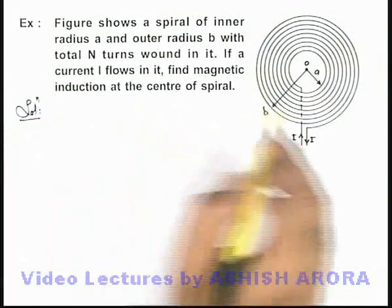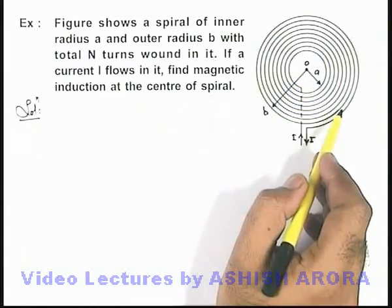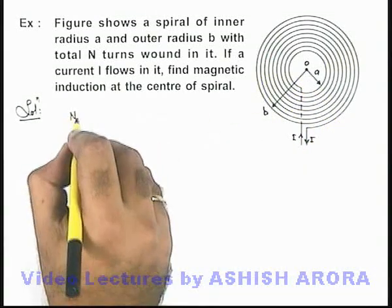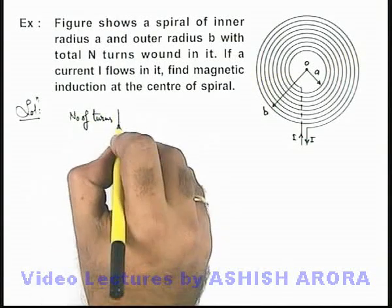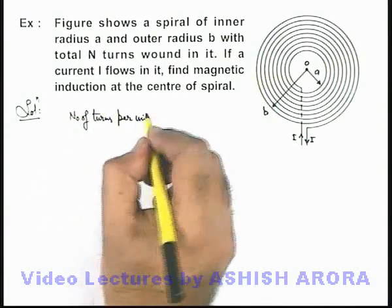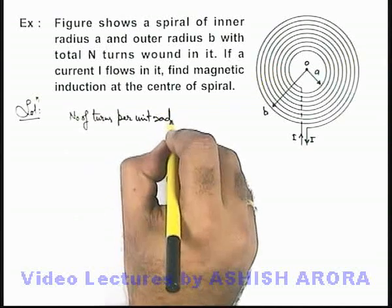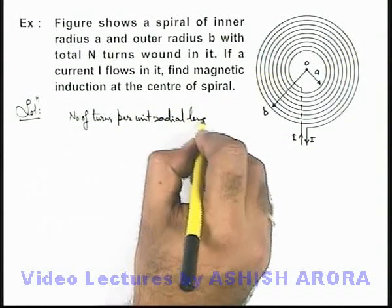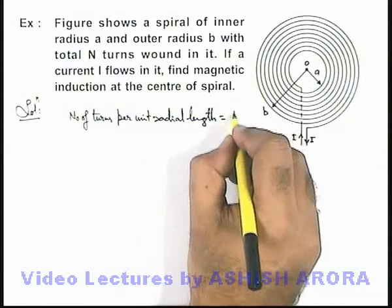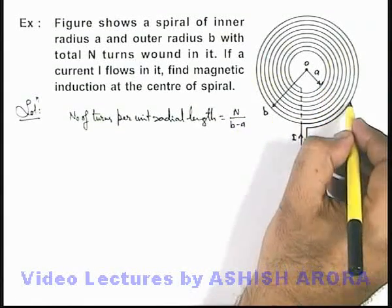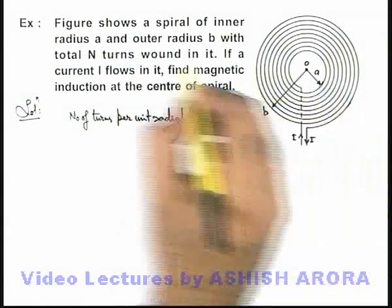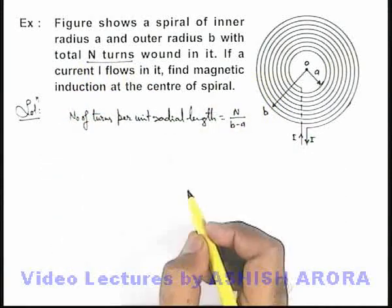Now in this situation, if along the radial direction we find out the number of turns per unit radial length, then it can be given as N/(b-a), because in the distance of b minus a there are total N turns wound, it is given to us.